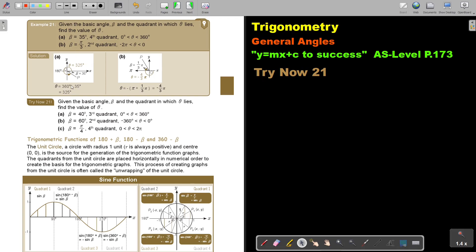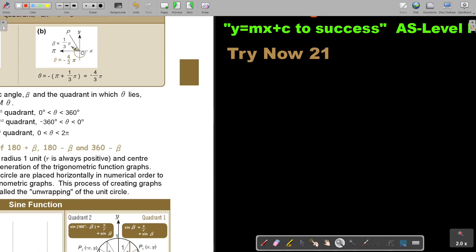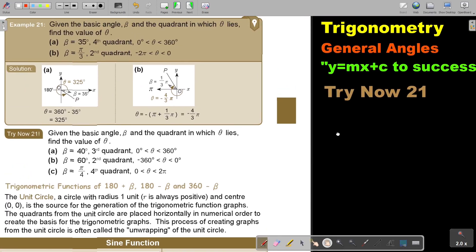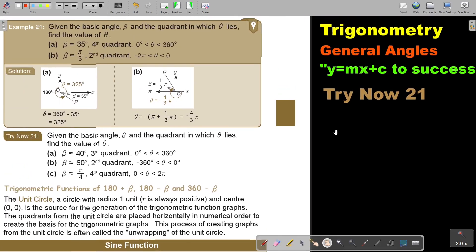Let's look at this example. Given the basic angle β and the quadrant in which θ lies, find the value of θ. If β = 35° and it's in the fourth quadrant, I can just say 360° minus 35°, which equals 325°.